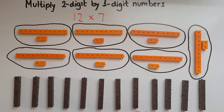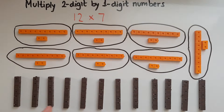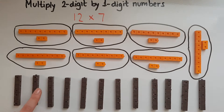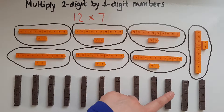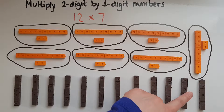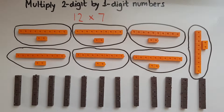With the brown cubes I've shown 12 lots of 7, so there is 1, 2, 3, 4, 5, 6, 7, 8, 9, 10, 11, 12 lots of 7. They both give me the same amount.